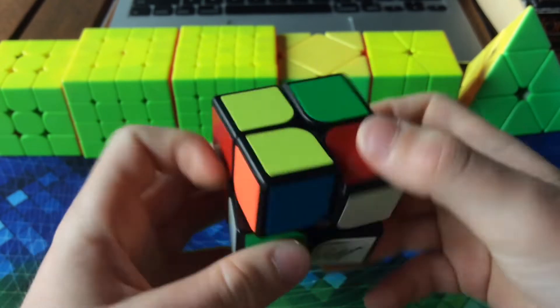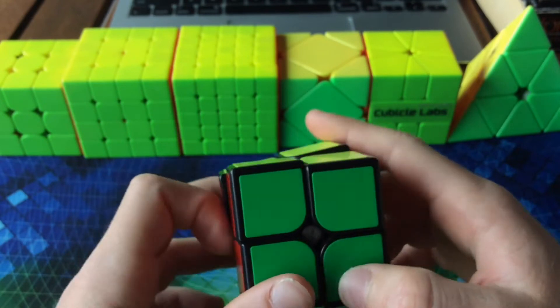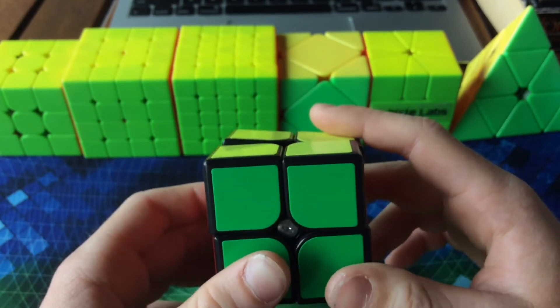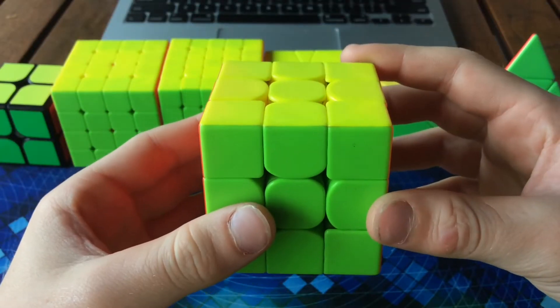I don't practice two by two that much, so it's fine for me. My goal for two by two is around sub 5.5 average and at least a sub 4.5 single.